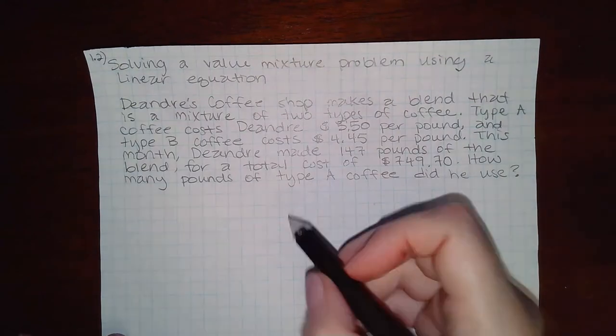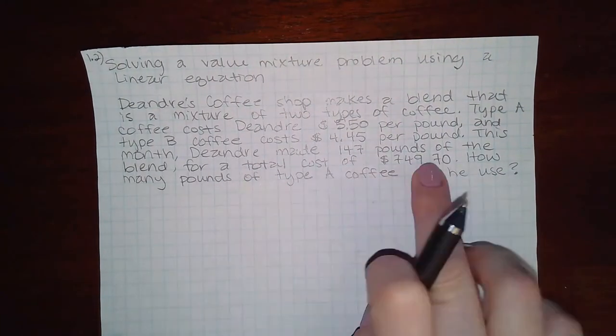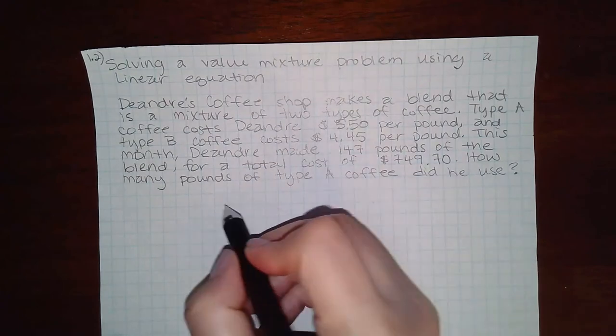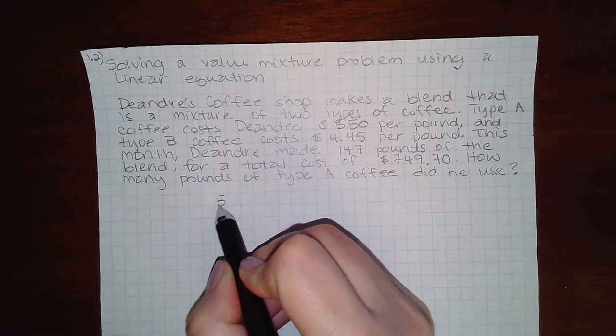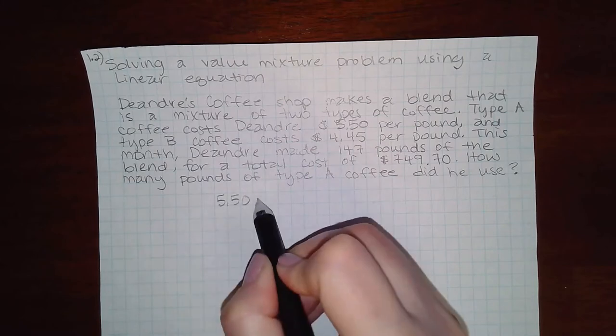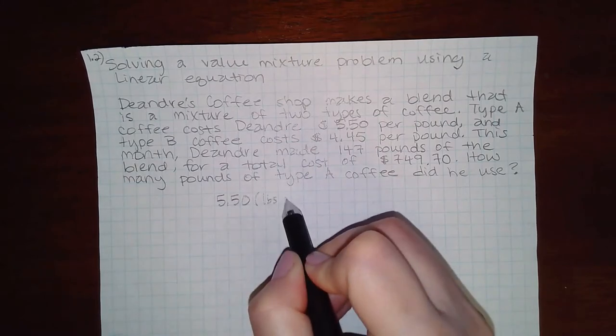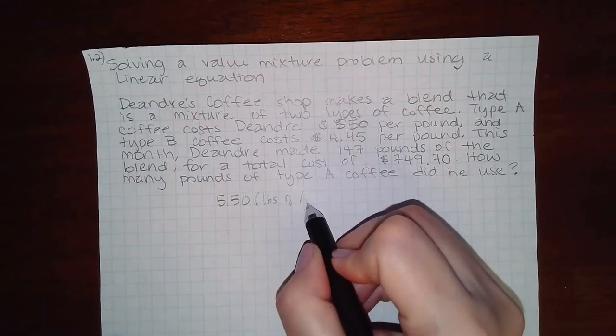So in order for us to figure out this total that they gave us, we would need to have type A costs $5.50. So it would be $5.50 times the number of pounds of type A,